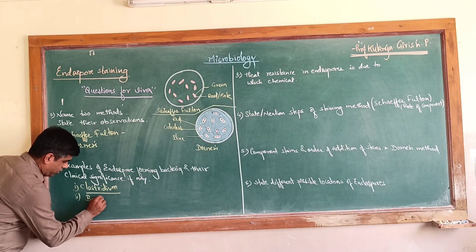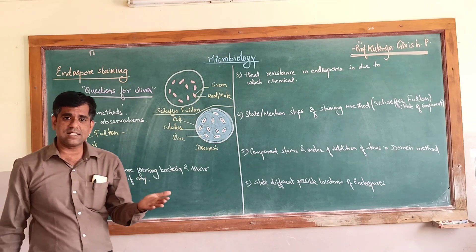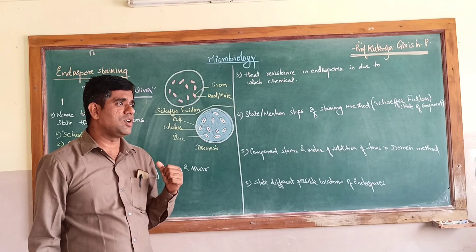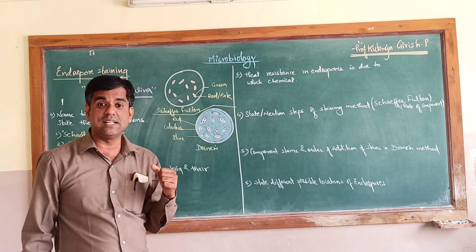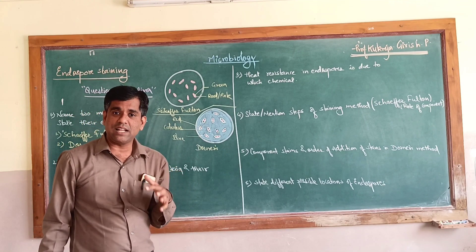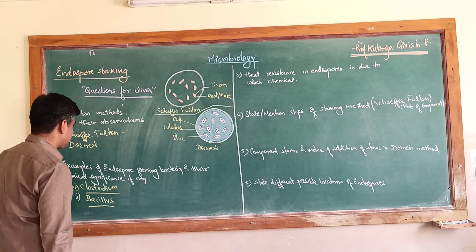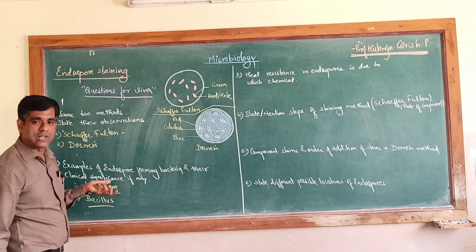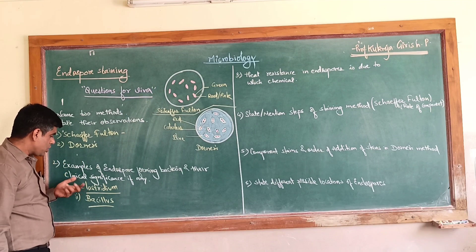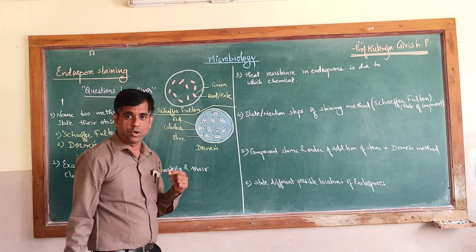Different species of Bacillus are also significant — Bacillus cereus is very common in food poisoning, and Bacillus anthracis is responsible for anthrax in animals and humans. The most common genera are Clostridium and Bacillus, both gram-positive rods.